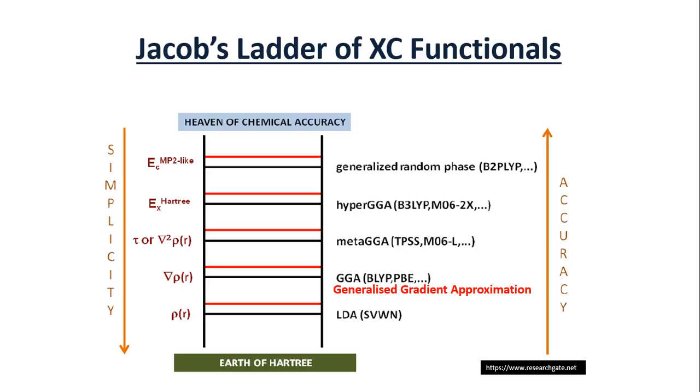Then finally comes generalized random phase. It is actually second order Møller-Plesset correction. Maybe in another video we can tell you what this actually is. So it includes the dispersion corrections. So let's go to the next slide.